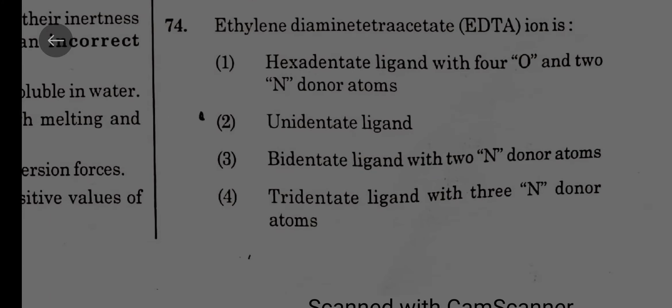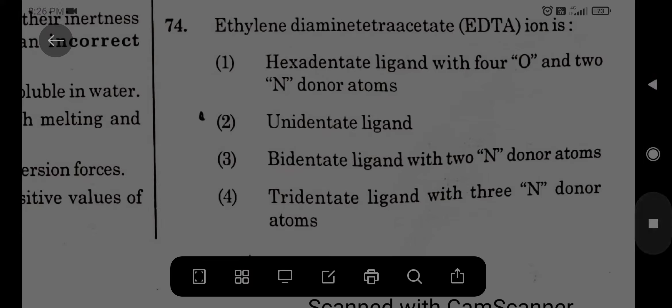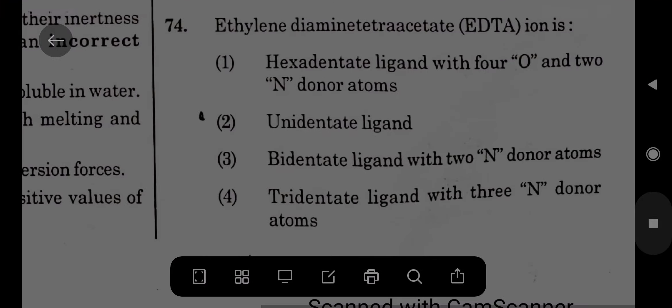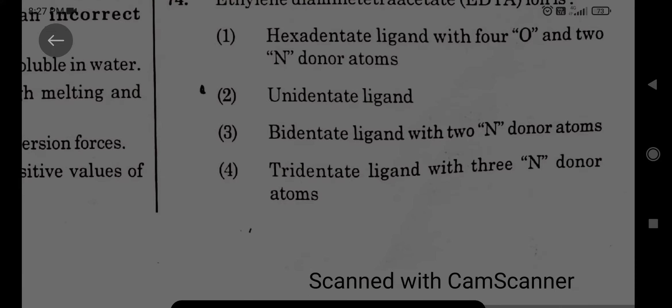Ethylenediaminetetraacetate is a hexadentate ligand. You know the structure of this: CH2-CH2-N with CH2-COO minus groups. This will be having CH2-COO minus, EDTA minus 4. So you can see here two lone pairs from nitrogens, then four from oxygens. So hexadentate ligand with four oxygen and two nitrogen donor atoms.